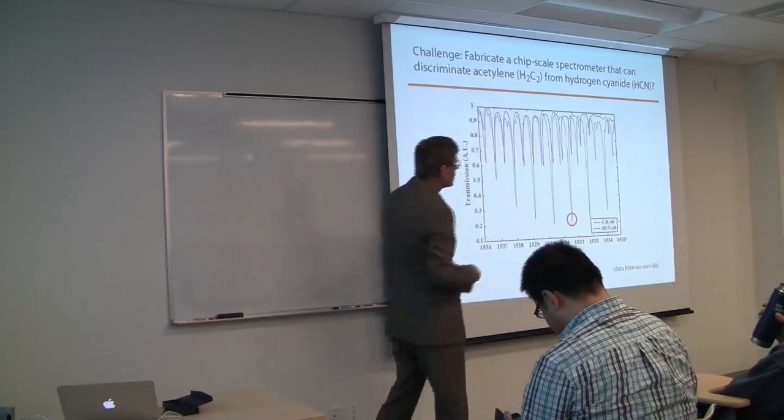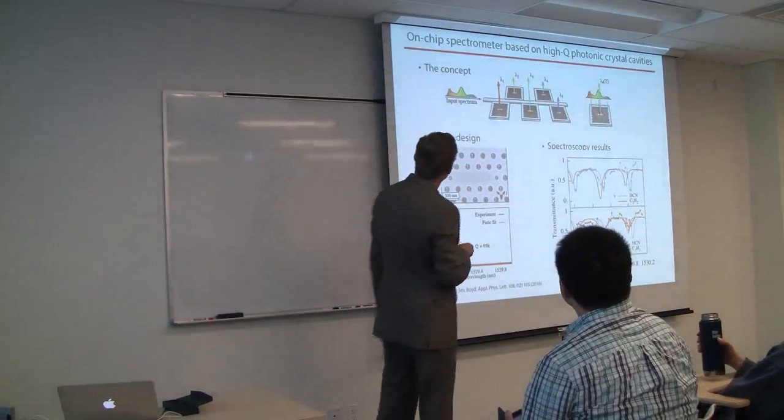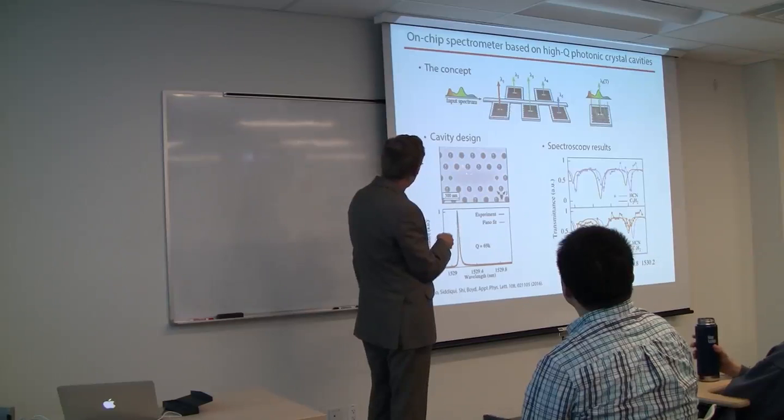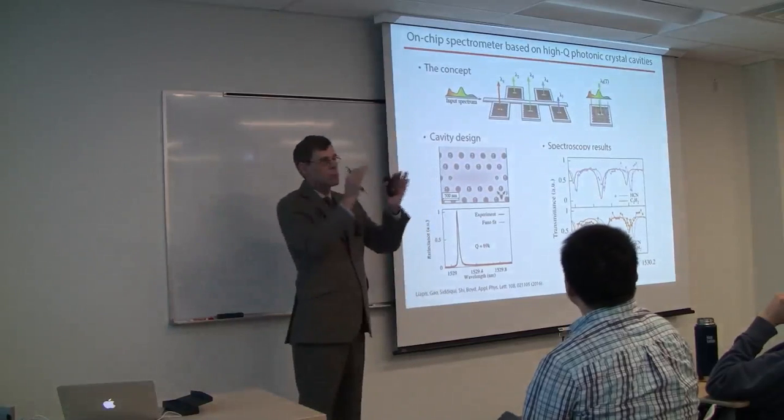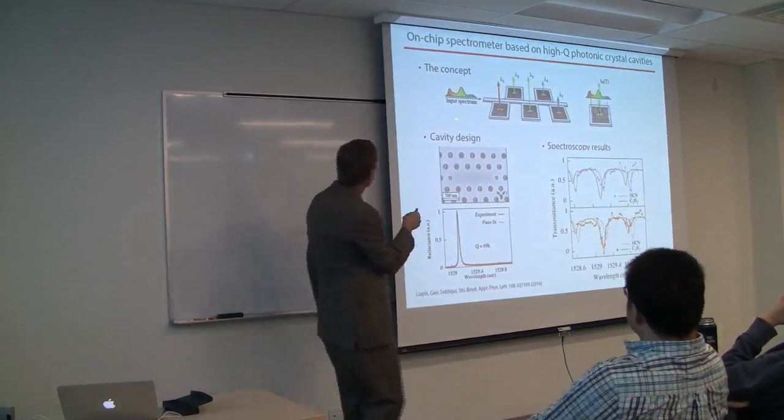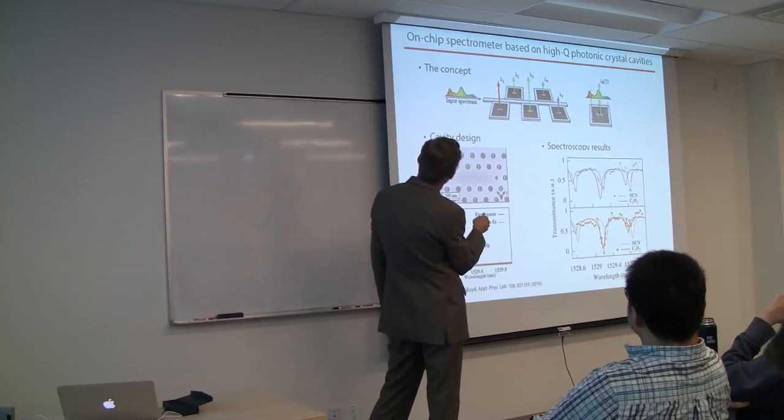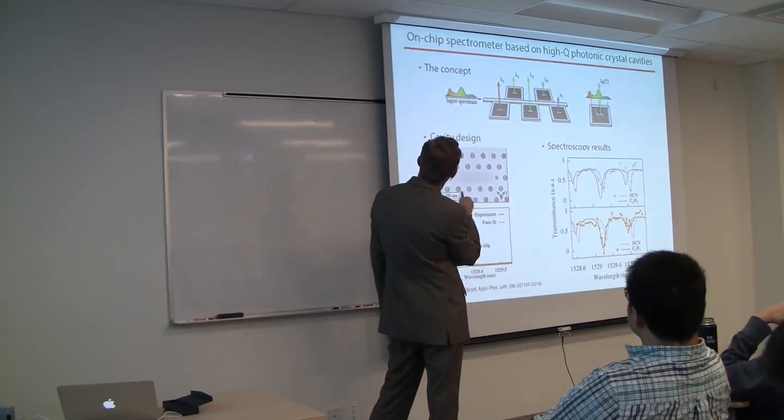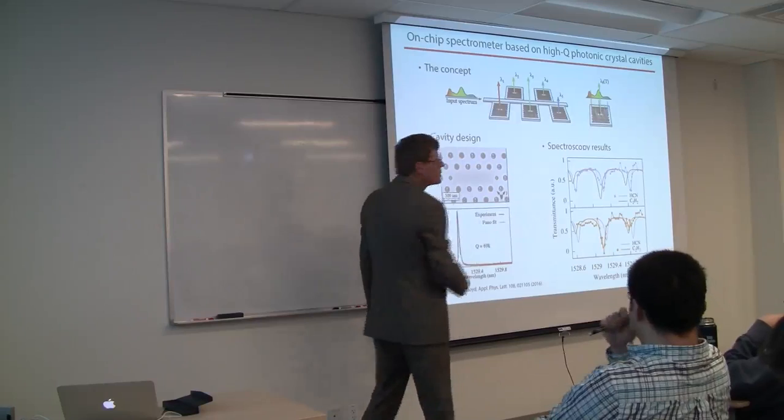Can we build a spectrometer that can distinguish these two spectra? Here's how we did it. We took a very different approach. These are defect resonators. We remove three holes from the structure. This acts like a resonator, analogous to a Fabry-Perot interferometer. We have a bus waveguide. The different cavities have different central wavelengths. Depending on what wavelengths are present in this beam, one or more of these cavities will light up.